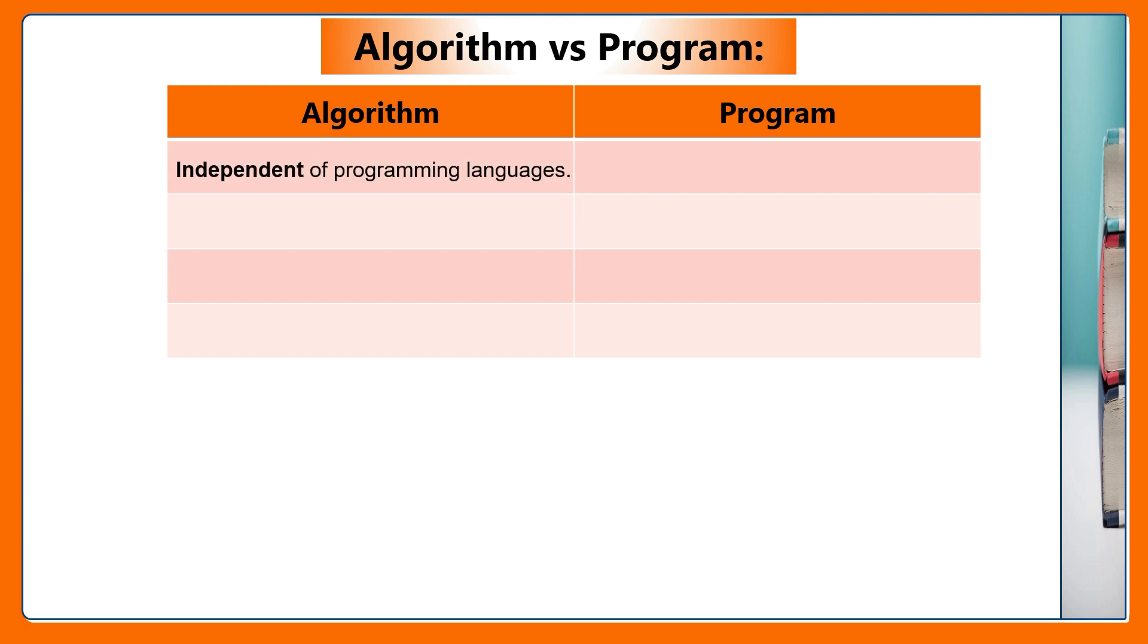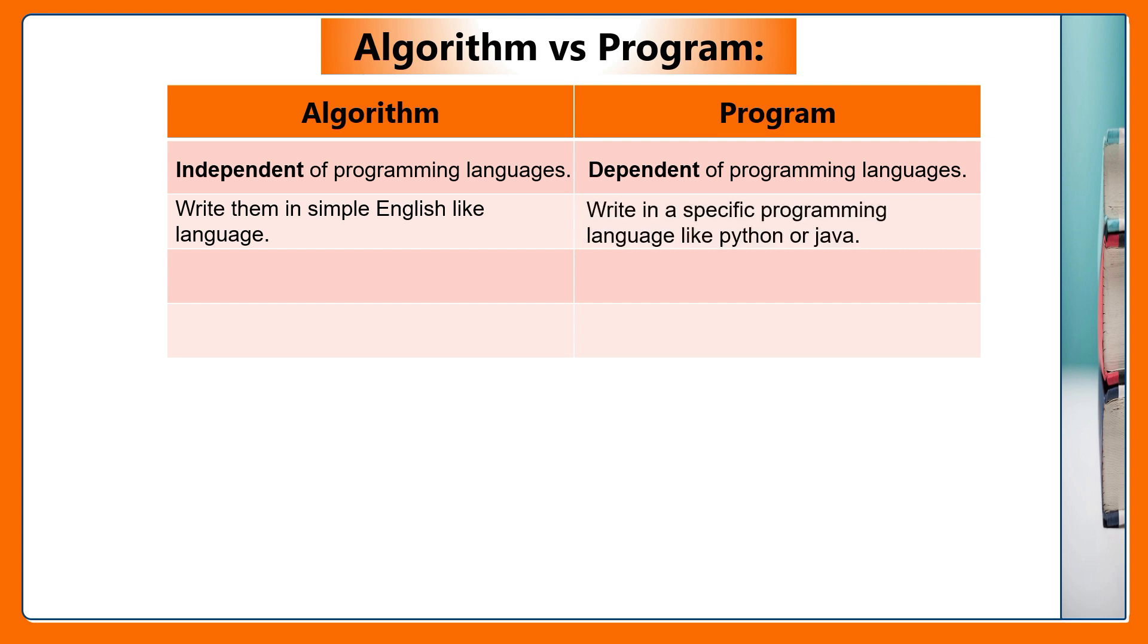Algorithms don't use programming languages. So they are independent of programming languages. Whereas, programs are dependent on programming languages. We write algorithms in simple English-like language. Anyone can understand the algorithm easily. Program is written in a specific programming language like Python or Java.